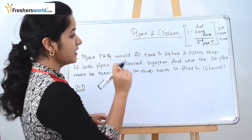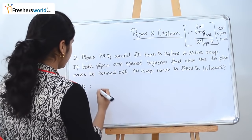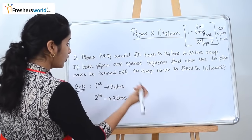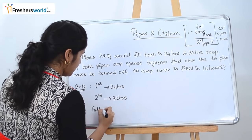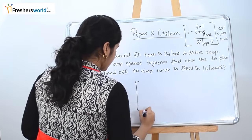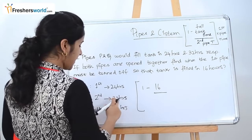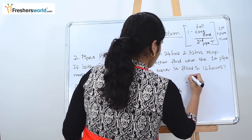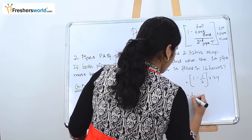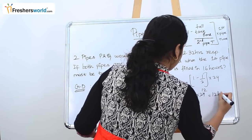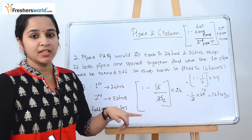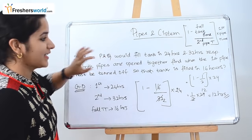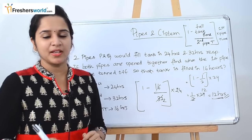We identify: first pipe time = 24 hours, second pipe time = 32 hours, full tank time = 16 hours. Substituting into the formula: (1 − 16/32) × 24 = (1 − 1/2) × 24 = 1/2 × 24 = 12 hours. So the first pipe must be turned off at 12 hours so that the tank is filled in 16 hours. Instead of an elaborate method, this formula gives the answer directly.